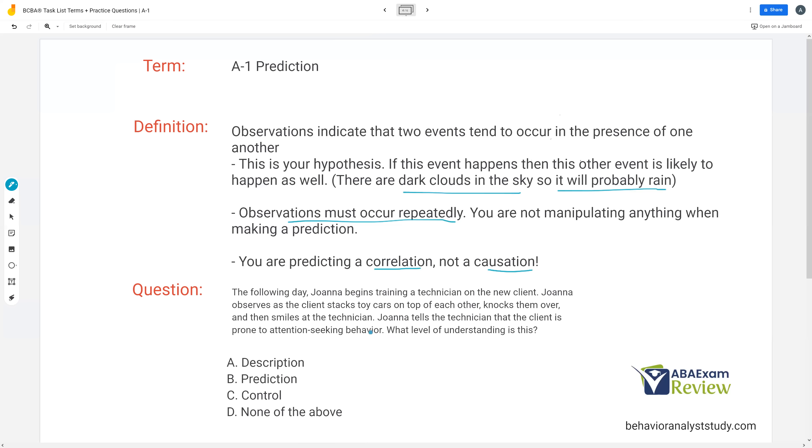Why? Well, it's happened again. The client not only stacked items again, knocked them over, and then smiled, but we're repeating the process from yesterday. So she's observed it multiple times. And now finally she's going to hypothesize this is attention-seeking behavior. Notice she has not yet manipulated anything. She's not demonstrating any level of control here. All she says is there's a correlation because I've seen these things occur together over and over and over again. That's all prediction is.